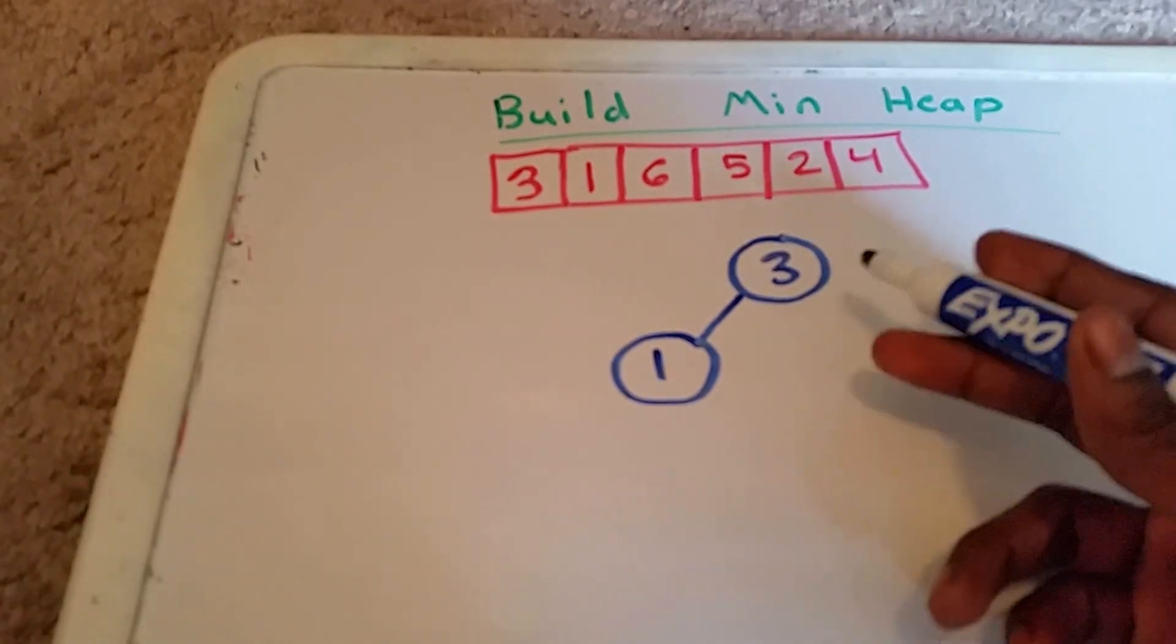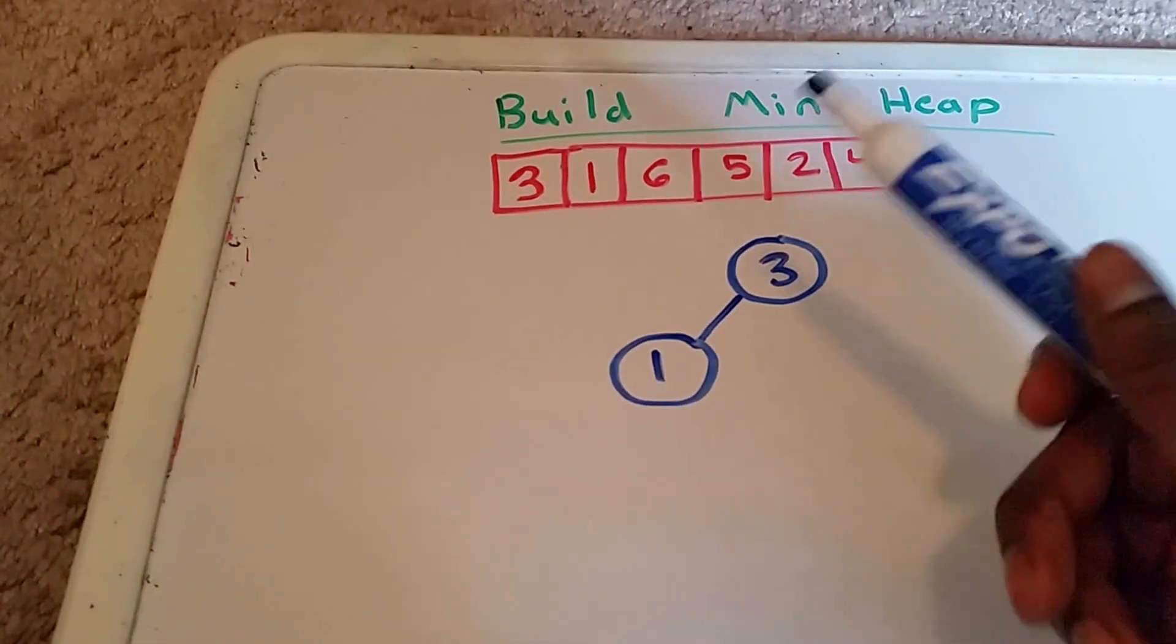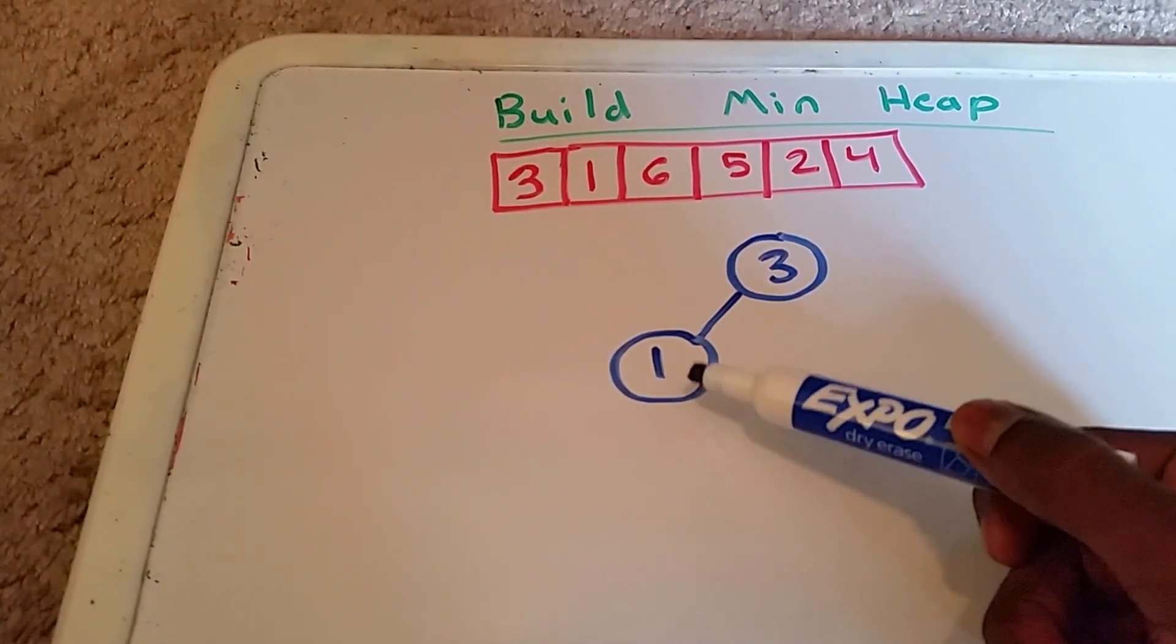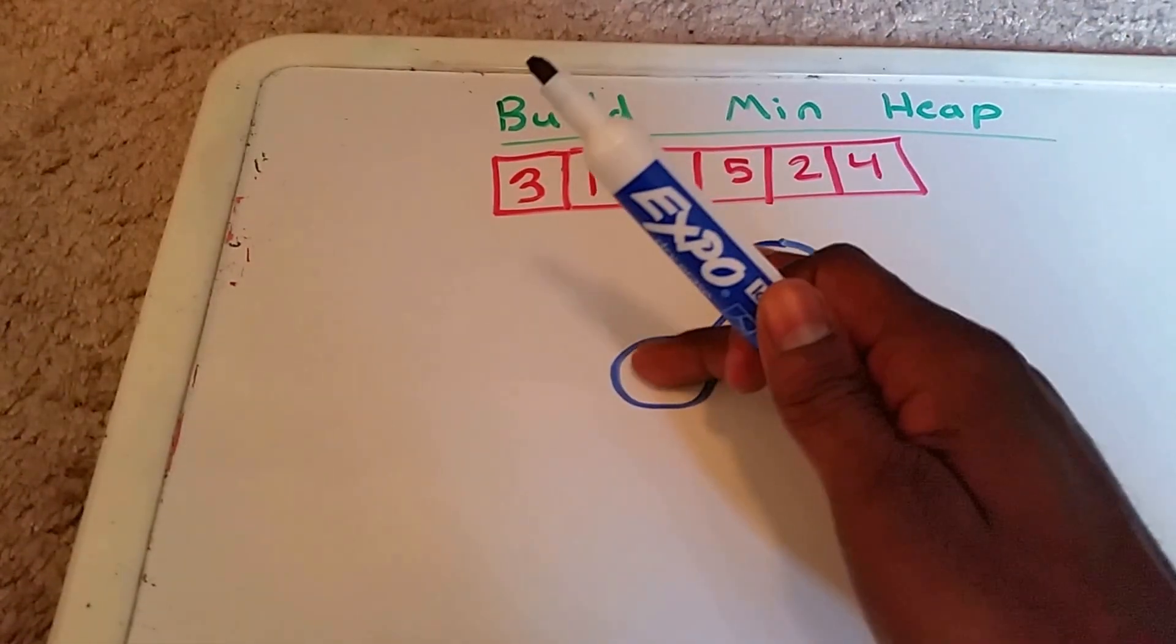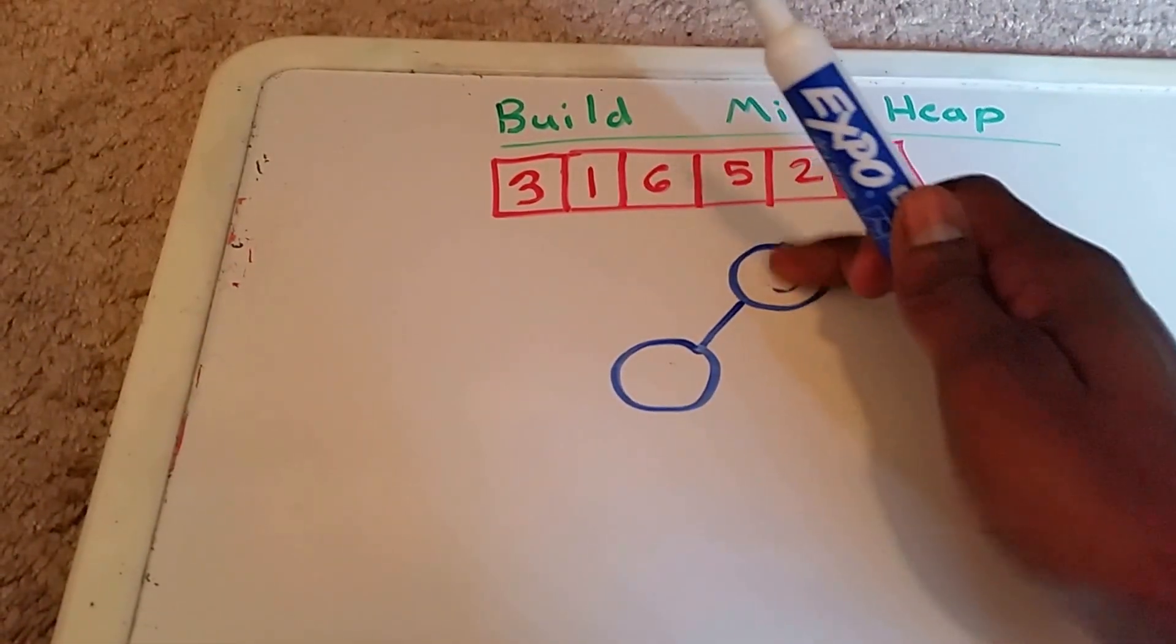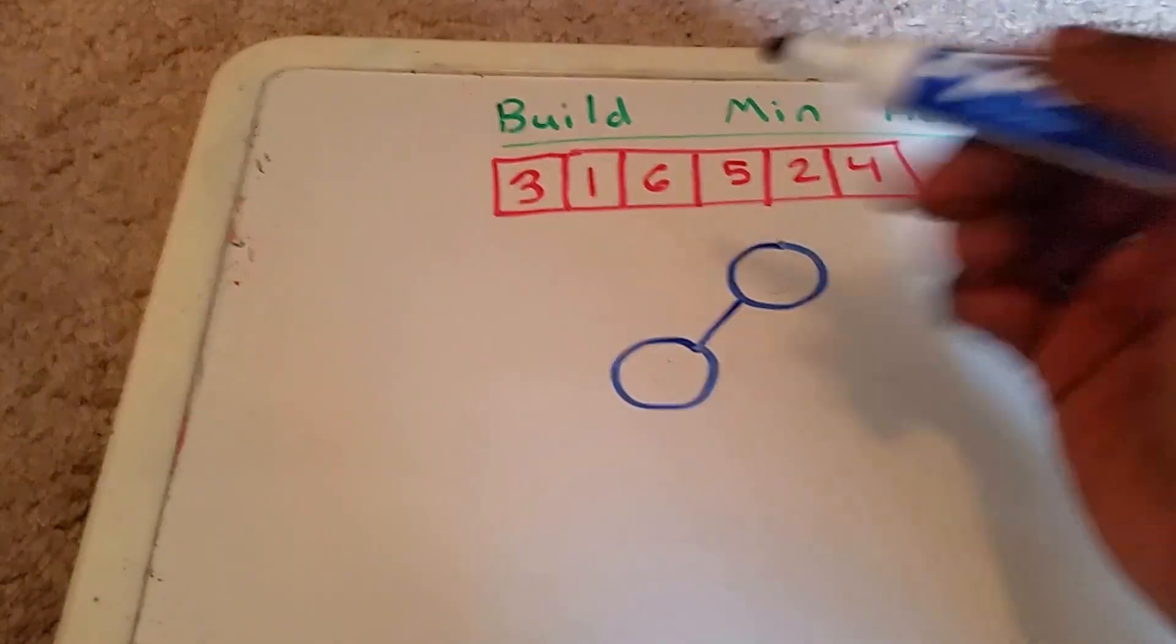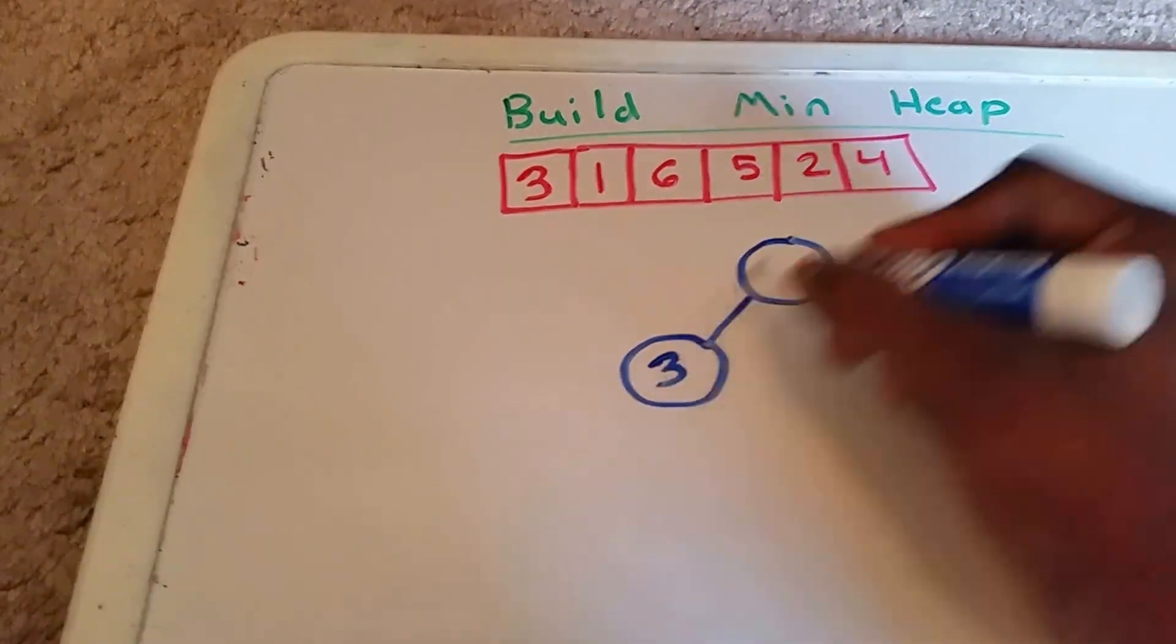Because this is a min heap, it must follow the property that all of the children are greater than or equal to its parent. So we have to swap these two elements. 3 goes here, 1 goes here, and we continue.